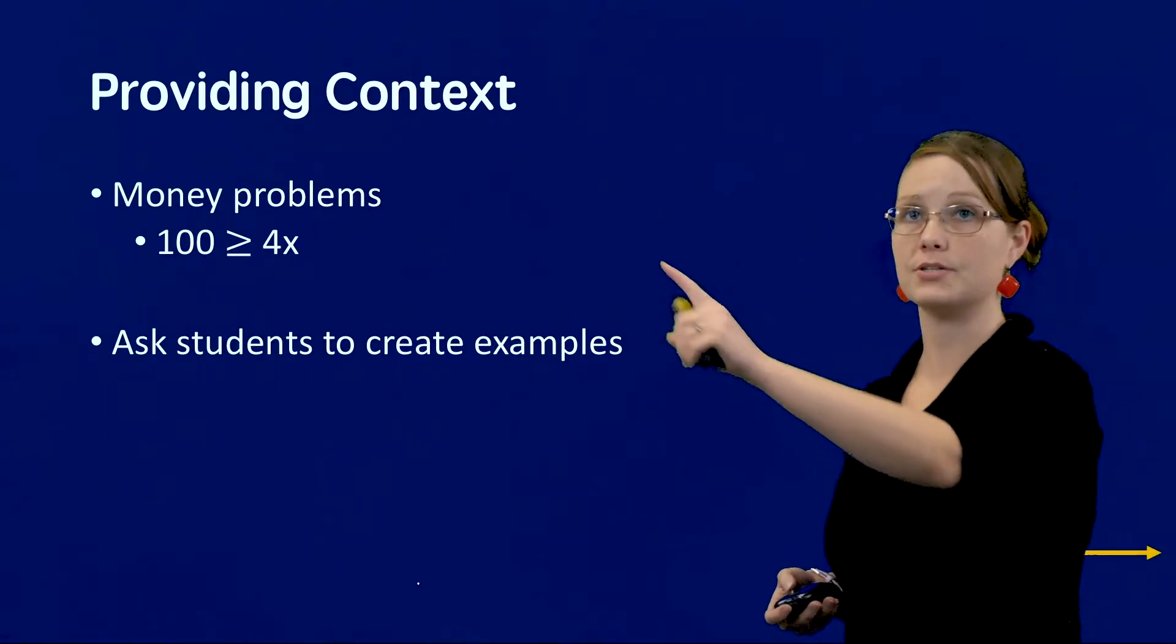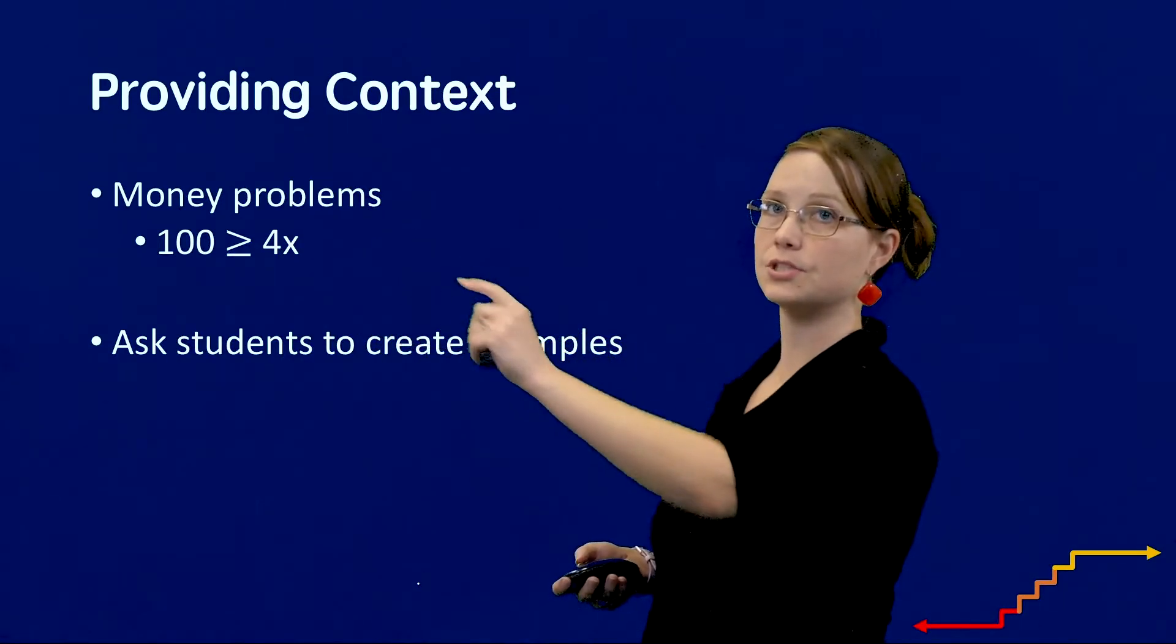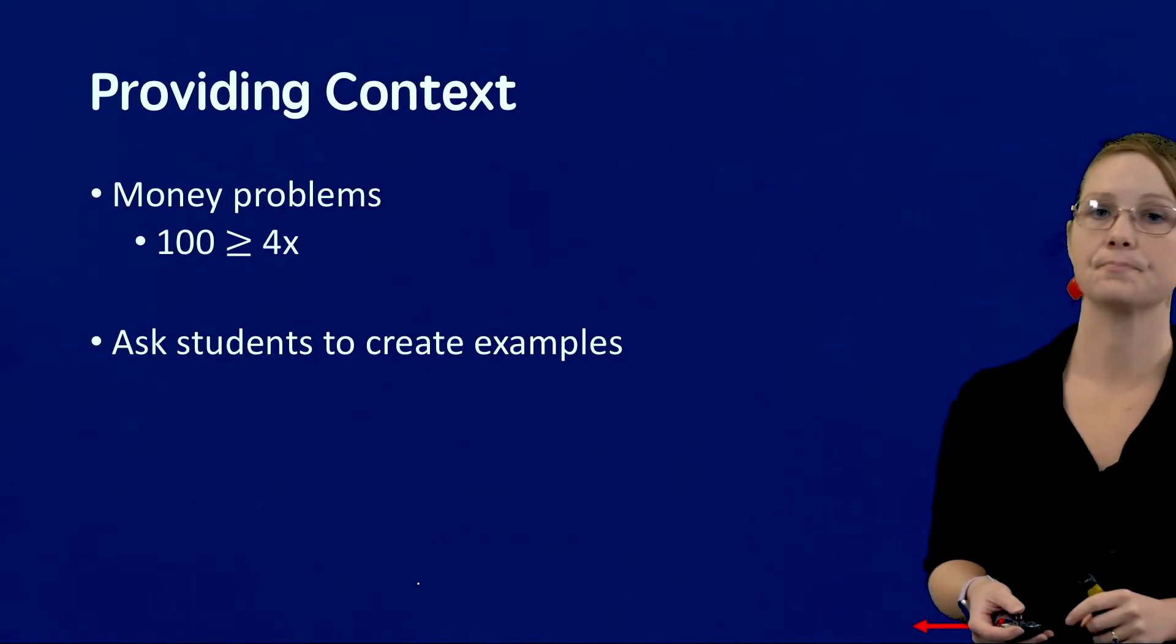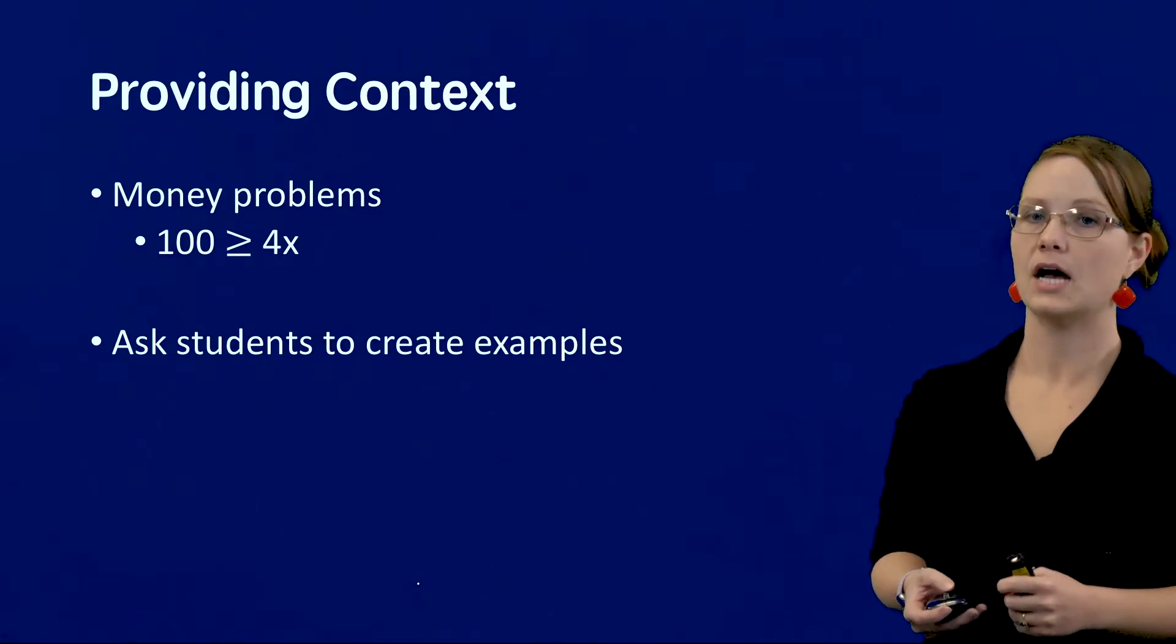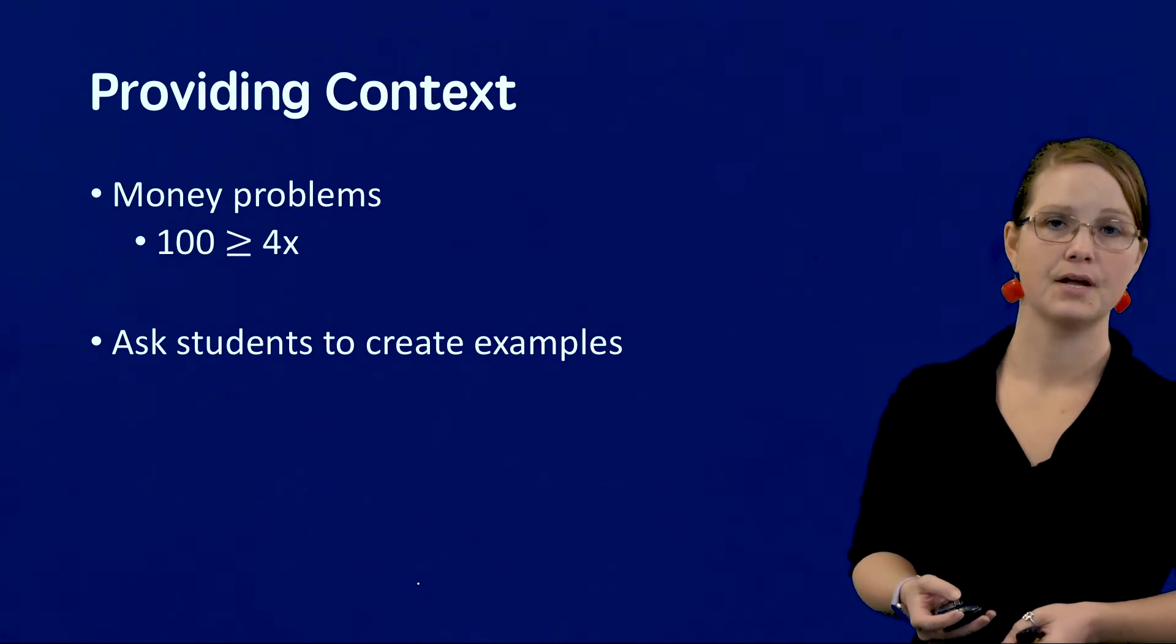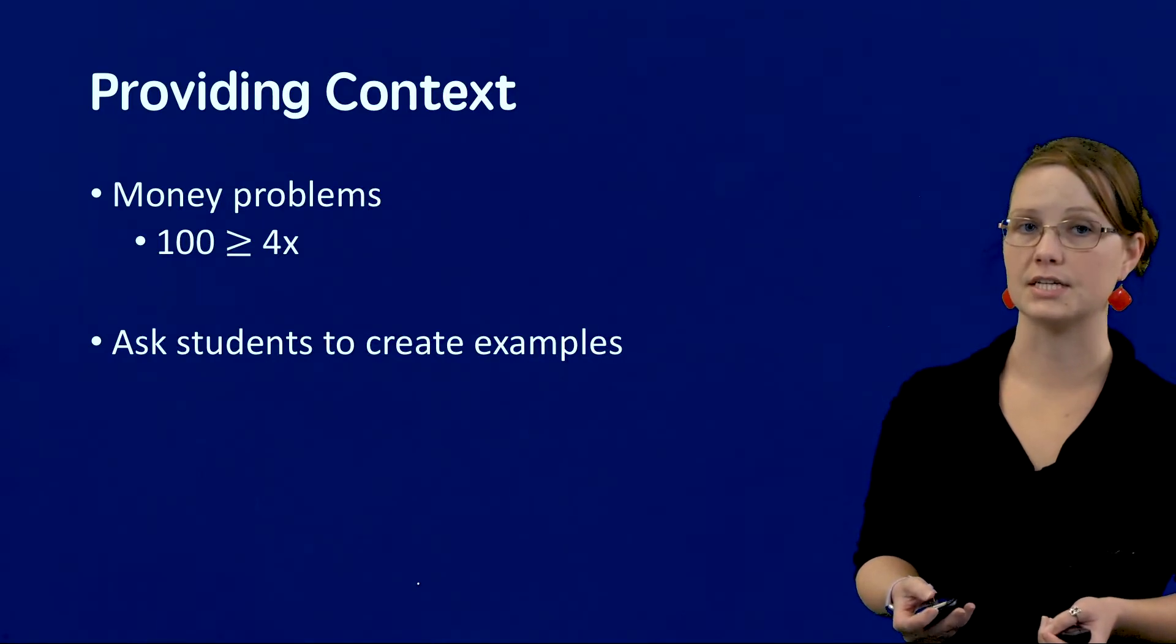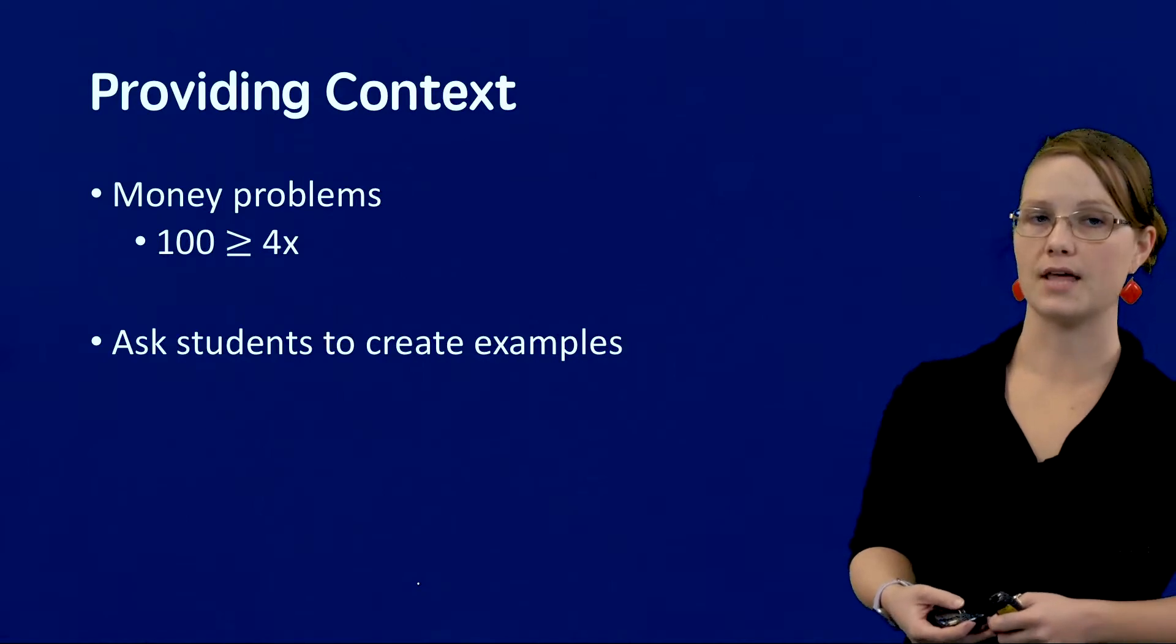I can contextualize this equation right over here, 100 is greater than or equal to 4x, by explaining that I have $100 and 4 friends. I want to buy each friend the same present and I only have the $100 to spend. I can spend less than $100 and still have money left over for me, but I cannot spend more than $100.